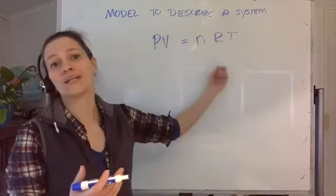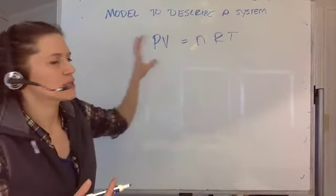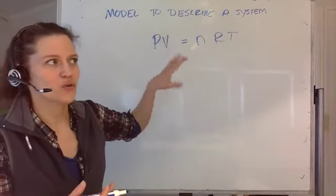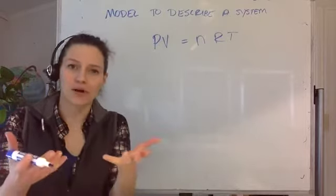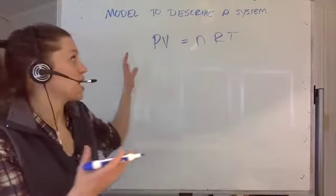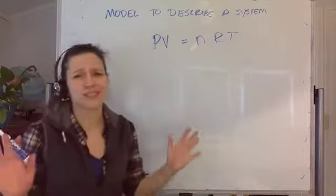But that doesn't mean that you can't model it using PV equals nRT, because when you're modeling a system, you aren't after exact reality, because sometimes that's just impossible to grasp. But you can use this to at least get some understanding of the system. This will all make more sense at the end of the term.